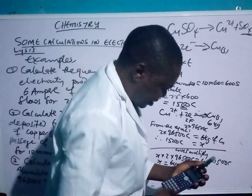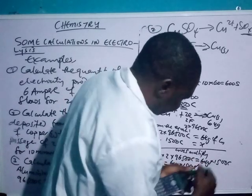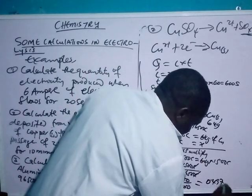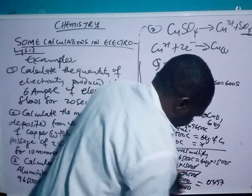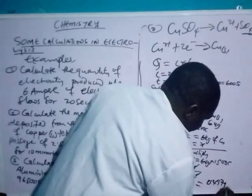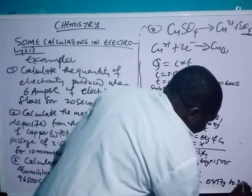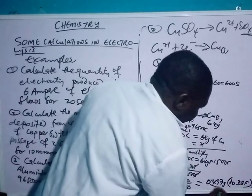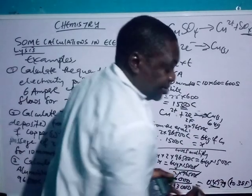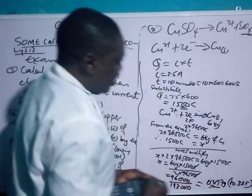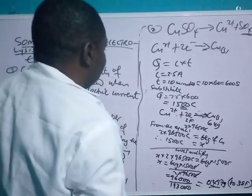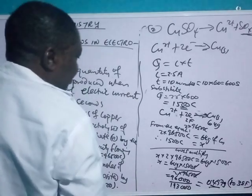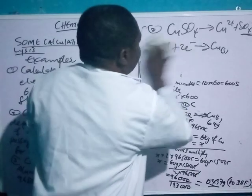Solving gives us 96,000 divided by 193,000, which equals 0.497 grams — to three significant figures. So that is how you calculate the mass of copper deposited. That is the second question answered. Let's also look at the third question.